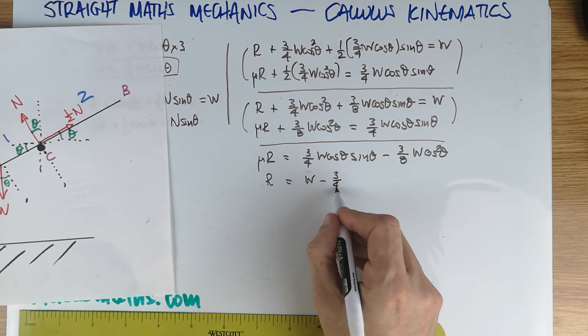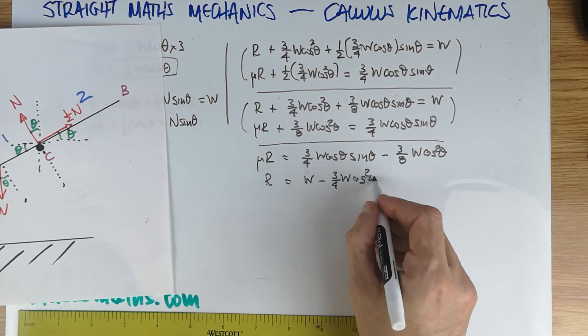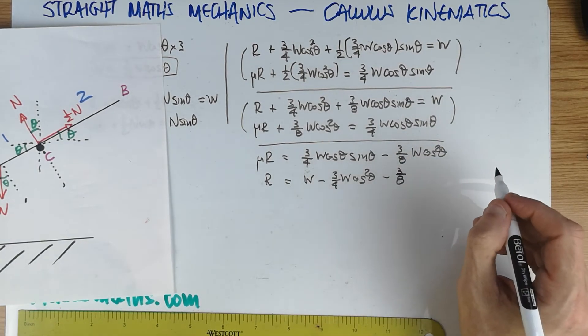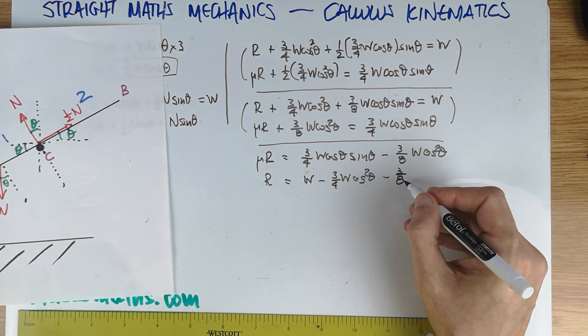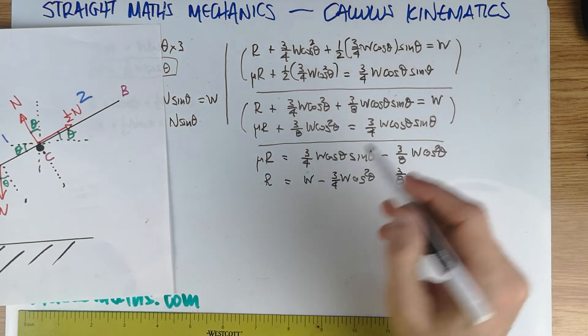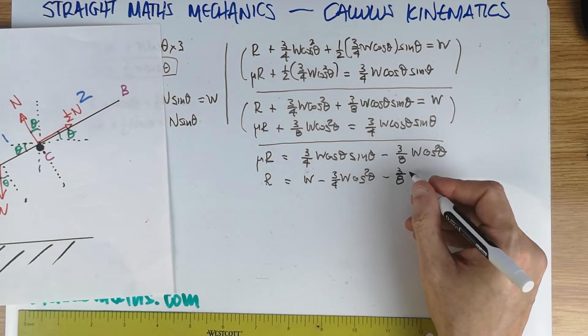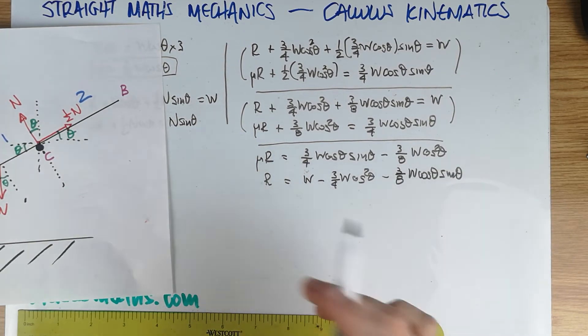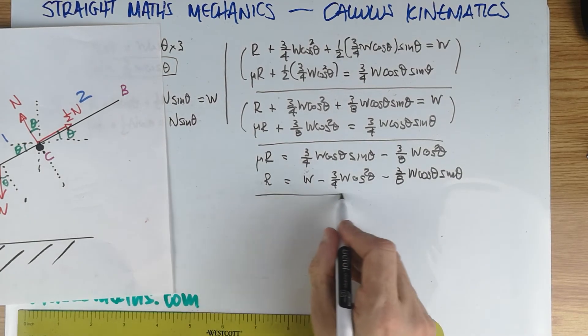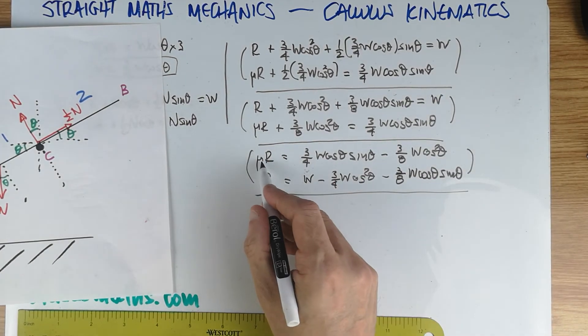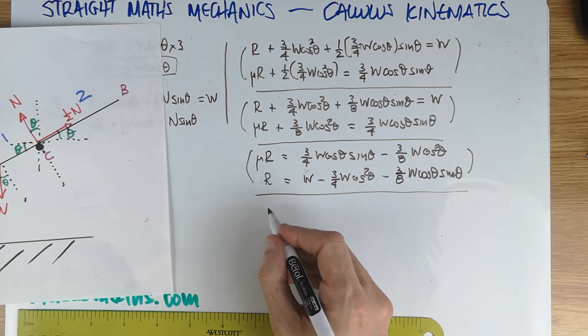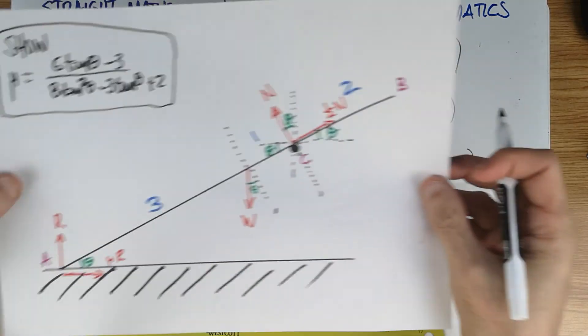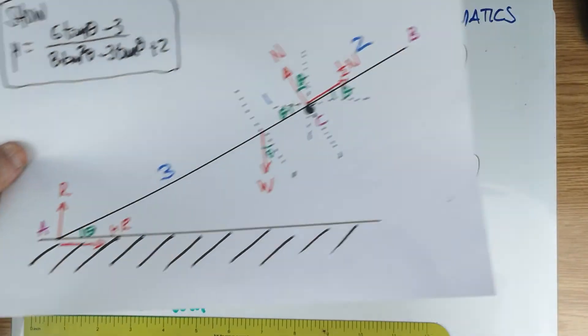That's that minus that, three-quarters W cos θ sin θ minus three-eighths W cos squared θ. And I'm going to write underneath, R is equal to, and I'm going to do the same thing on this particular one, which is W minus three-quarters W cos squared θ minus three-eighths W cos θ sin θ. I'm on this line here. I'll just rearrange them. You might be thinking I'm going to put this R in there. You can, but I'm going to divide both equations now, side by side. If I divide μR divided by R, I eliminate completely the R, the R is gone.